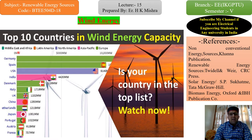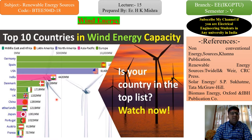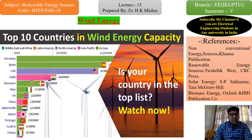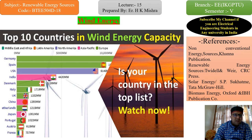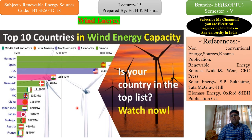Now let's look at the top 10 countries in wind energy capacity. I have color-coded them: Middle East and Africa, Latin America, North America, Asia Pacific, and Europe. Among European countries, Germany has the highest renewable energy capacity, followed by Spain, then Denmark, then Italy, then UK, Netherlands, Portugal, Austria, and France. These European countries lead because the temperature conditions and coastal areas around Europe are very favorable for wind variation.